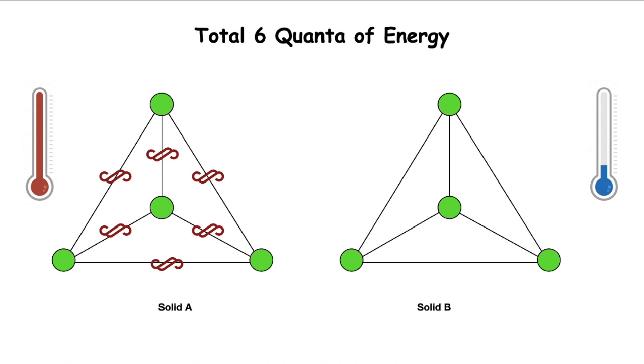Looking back at our systems solid A and solid B: if we have six quanta of energy in solid A at higher temperature and solid B has zero quanta at lower temperature, solid A will be hotter. Now if energy gets distributed, let's say two quanta is given to solid B, its temperature will raise a little bit because it has more energy than before.